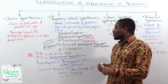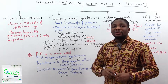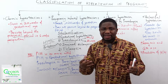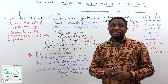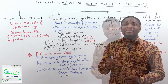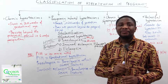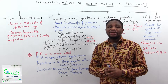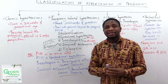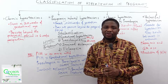Finally, we have eclampsia. Eclampsia is characterized by hypertension with onset after 20 weeks of gestation, proteinuria, and in addition, seizures, fits, or convulsions. That is what we call eclampsia — it comes with the seizures, fits, or convulsions.